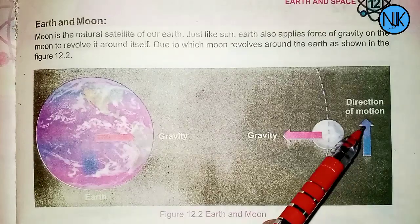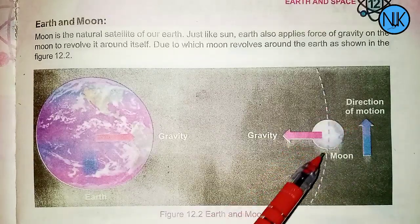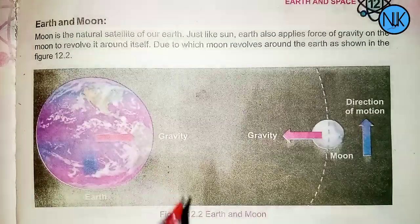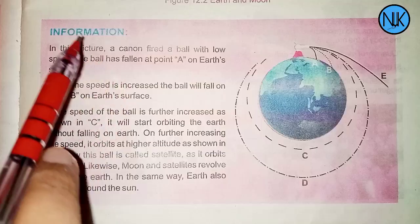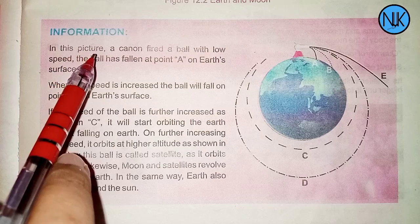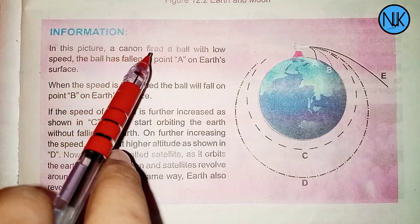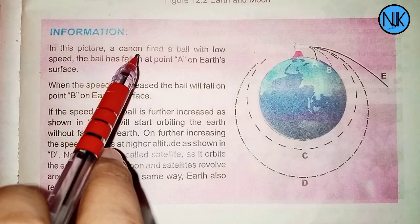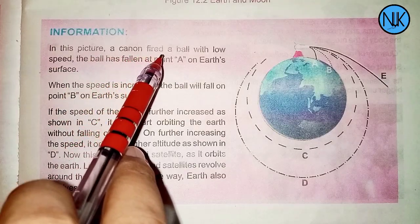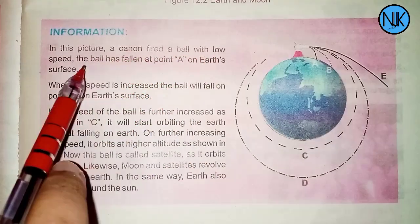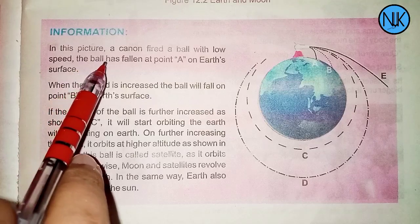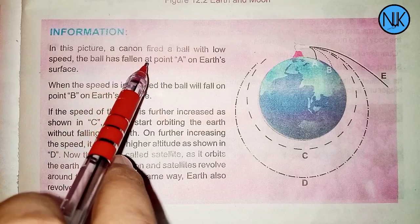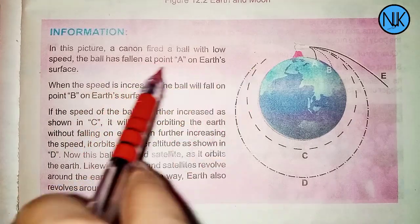Section 12.2. In this picture, a cannon fired a ball with low speed. The ball has fallen at point A on our surface.